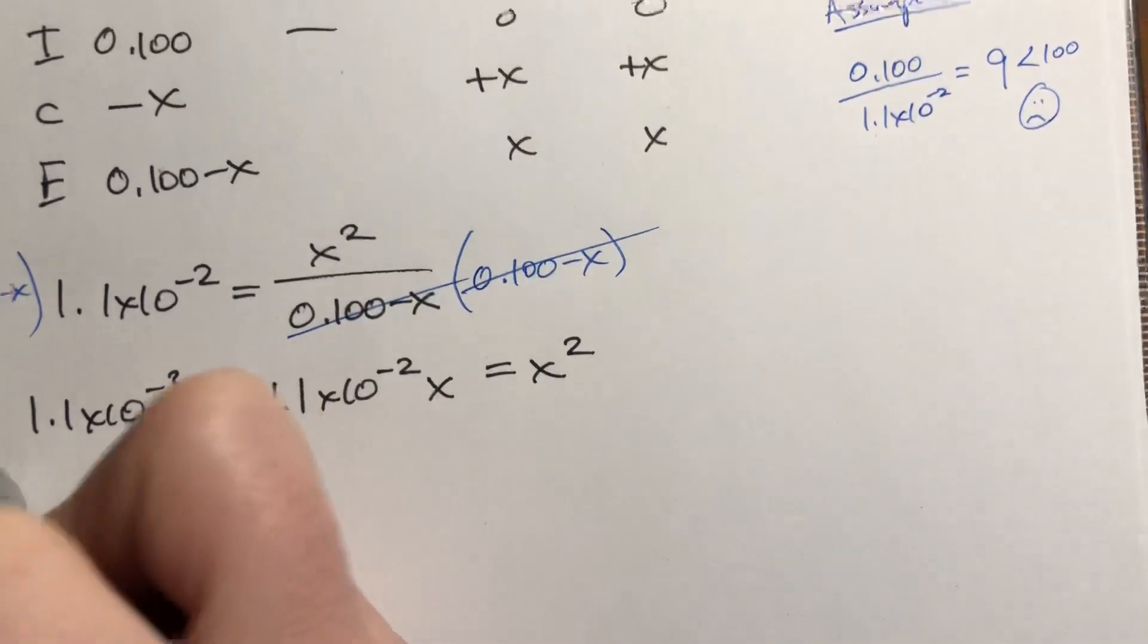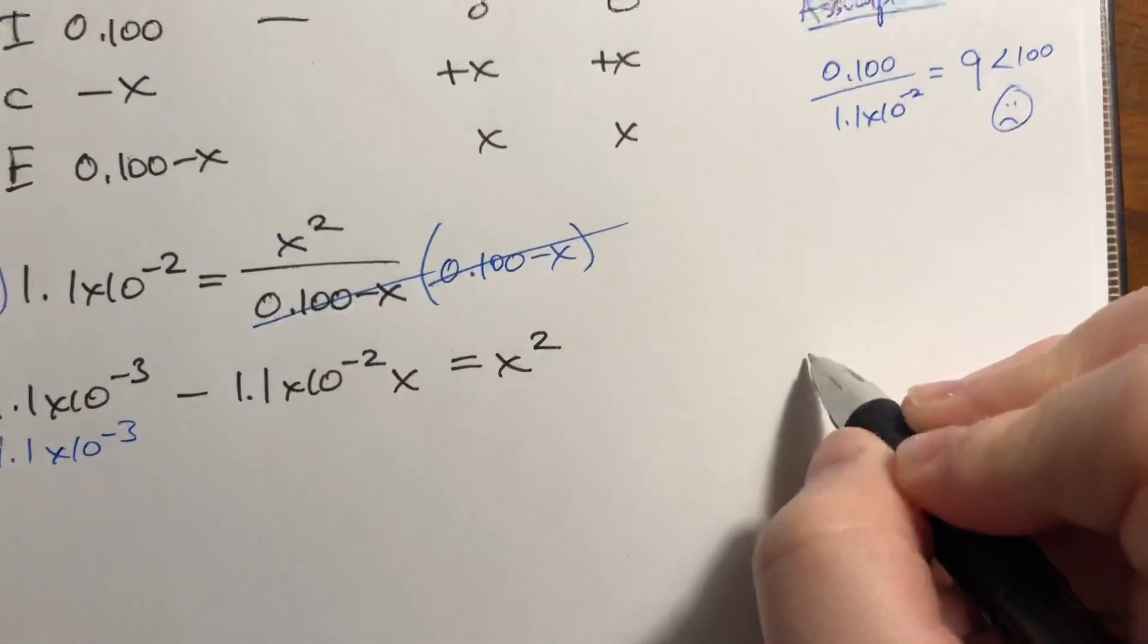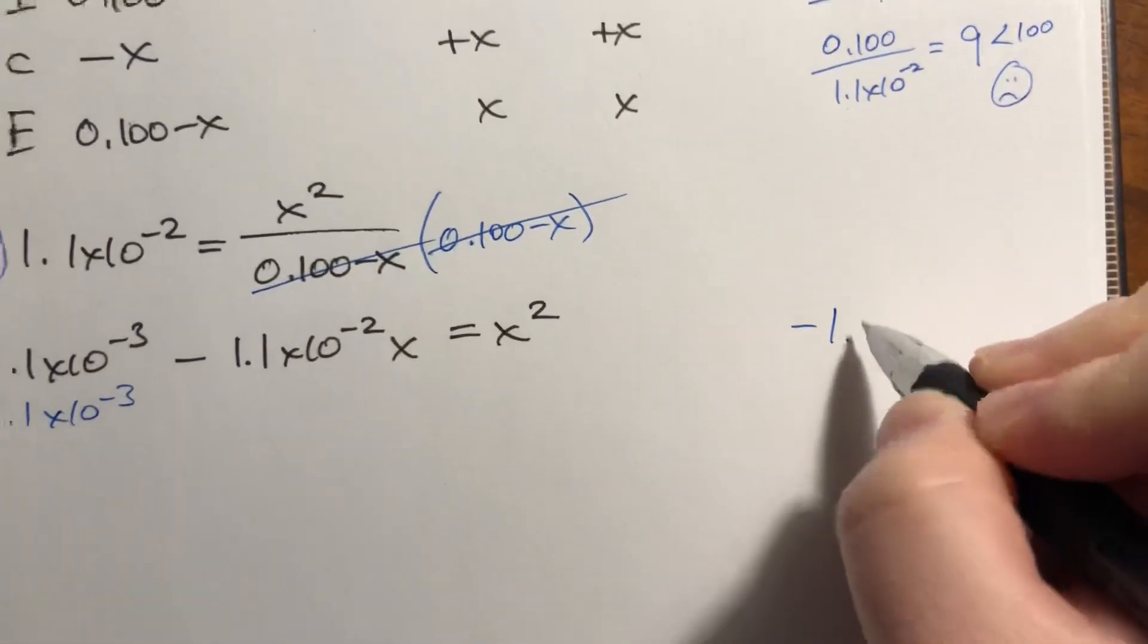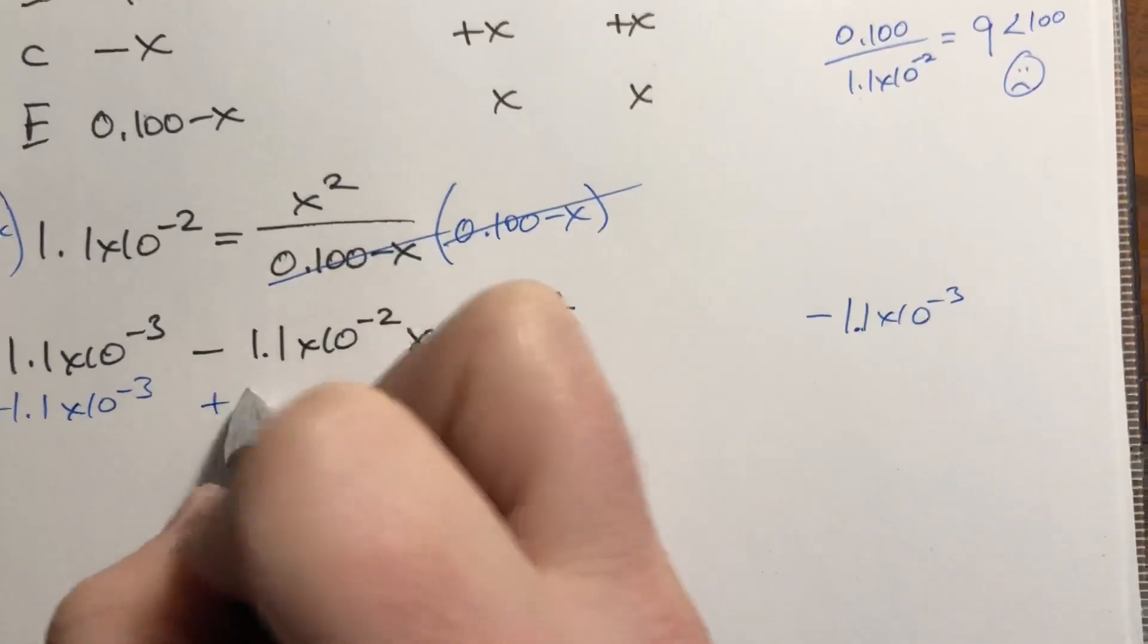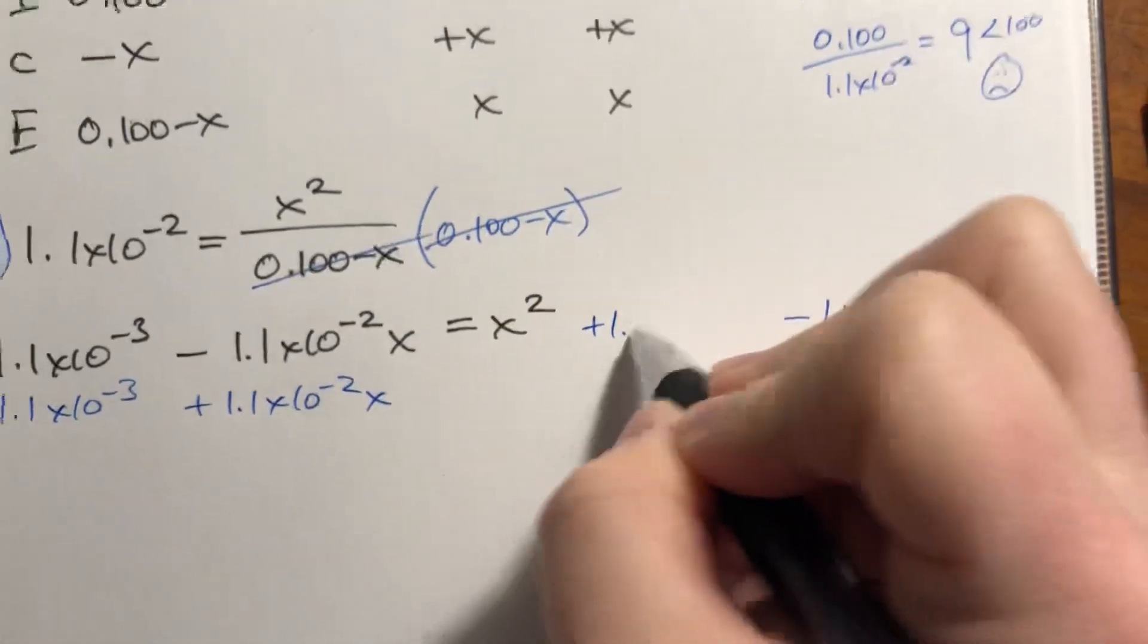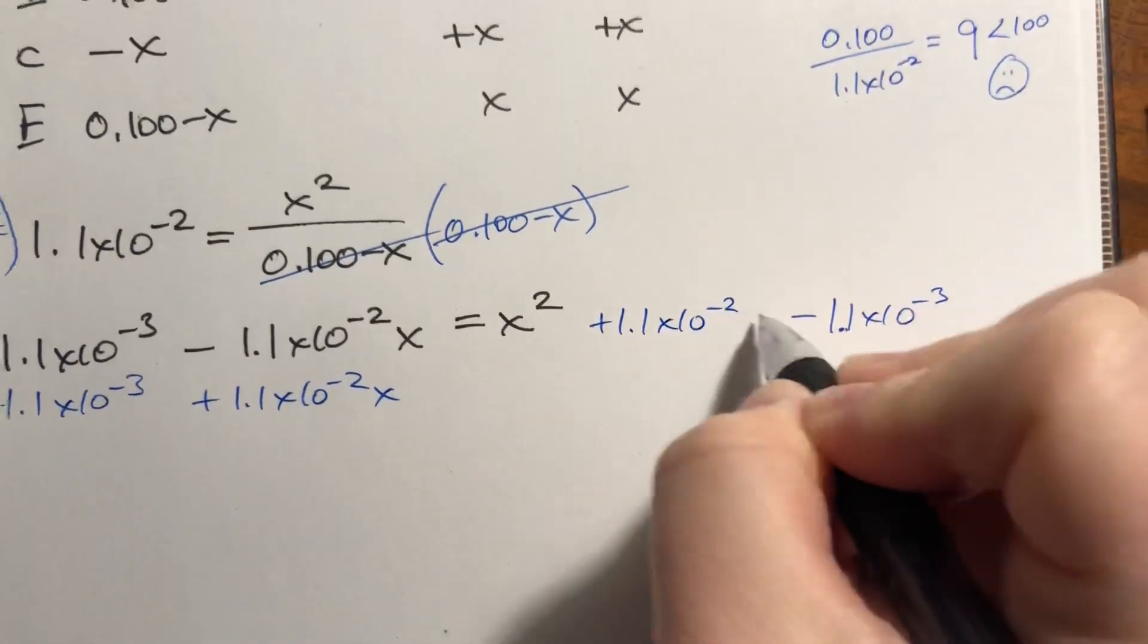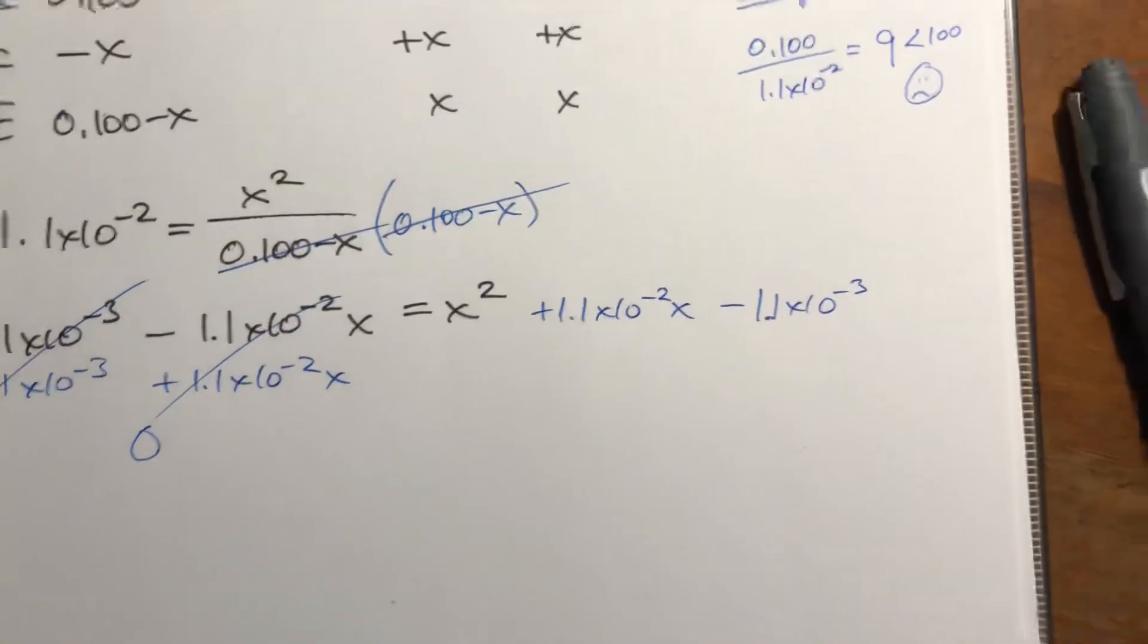Showing all of our work, we're going to subtract this off both sides, and write it over here though. And then we're going to have to add 1.1 times 10 to the negative second x to both sides. This goes away, this goes away, and this whole side becomes equal to 0.